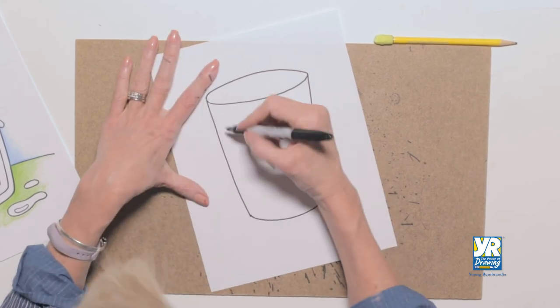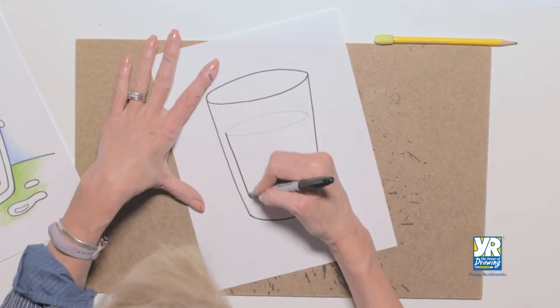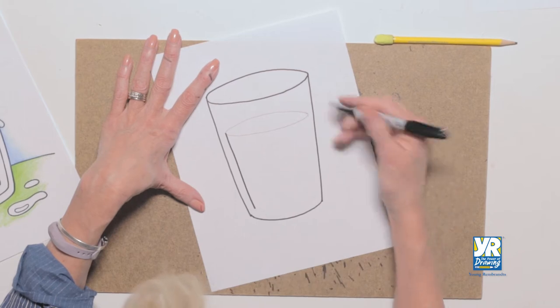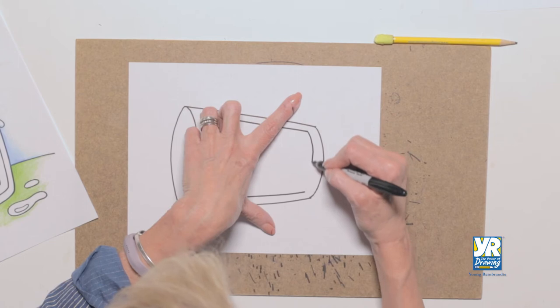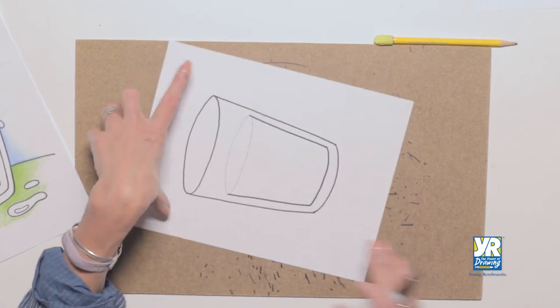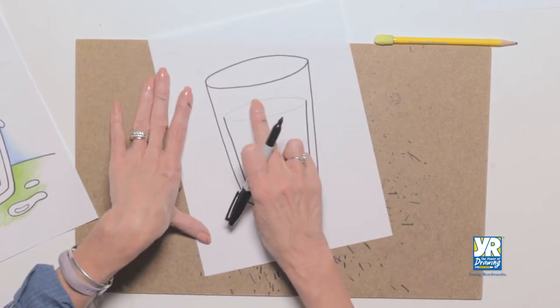Tuck it in on each side. Now I'm gonna be able to come down and I have parallel lines. Same shape and I've got it right across the bottom. There, look at that parallel.